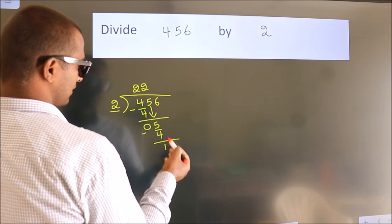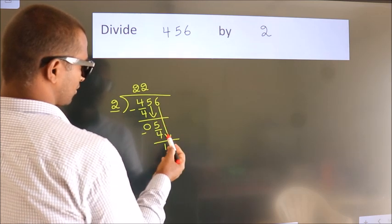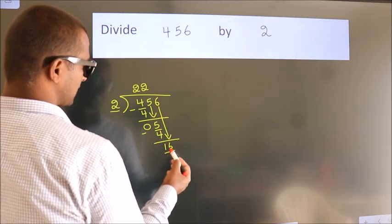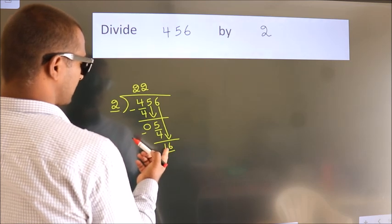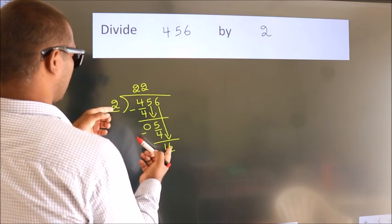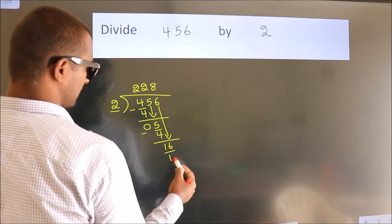After this, bring down the beside number. So 6 down. So 16. When do we get 16? In 2 table: 2 8's, 16.